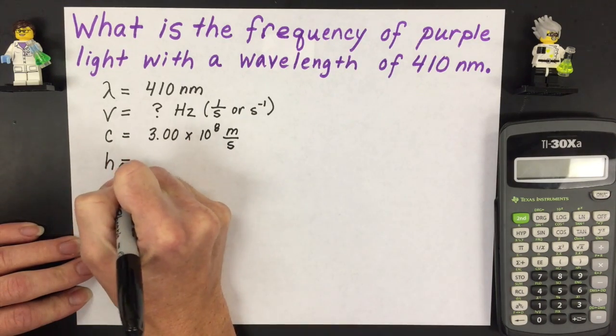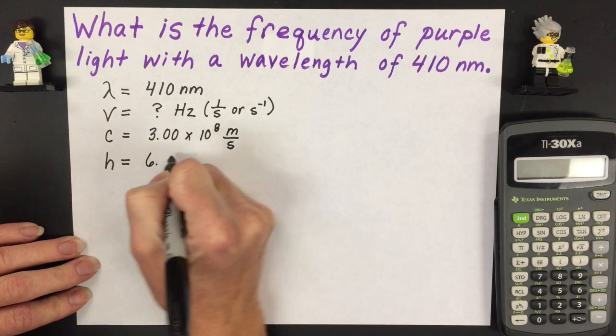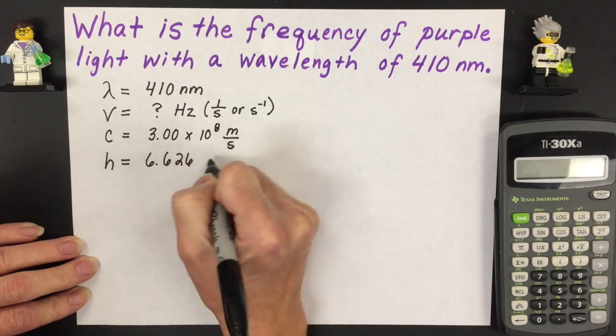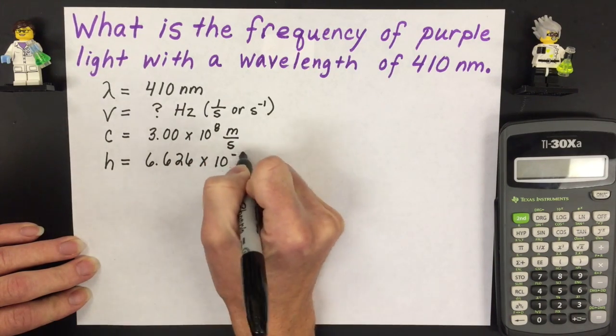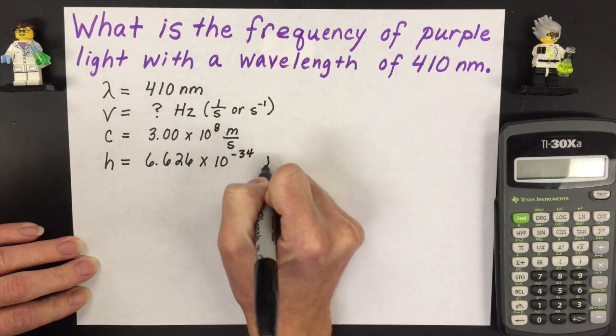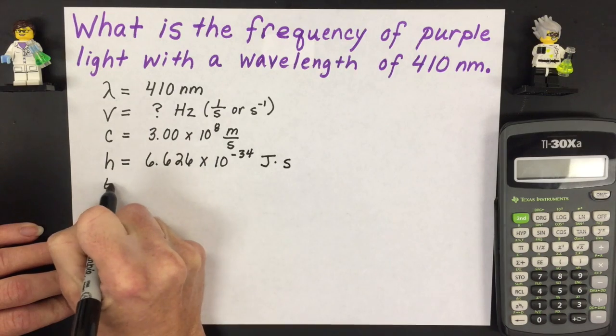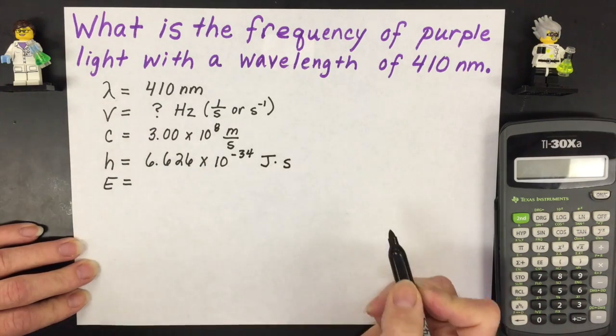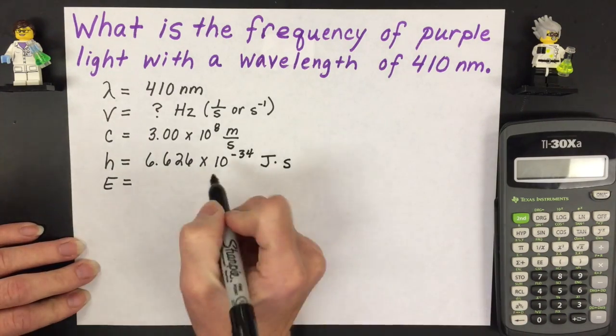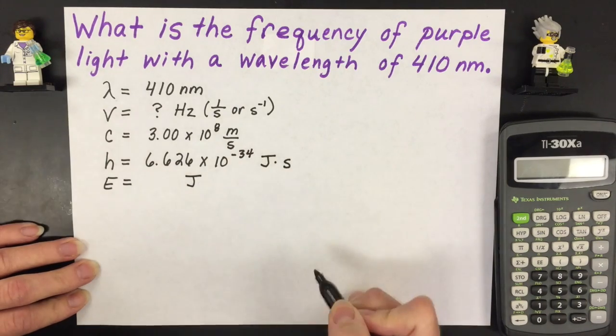You can also realize that you have the constant Planck's constant which is 6.626 times 10 to the negative 34 joules times second. We also could try to solve for energy but that's not in this problem at this point. If we did it would have the unit of joules.